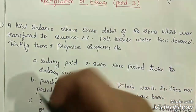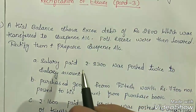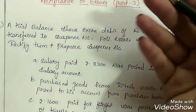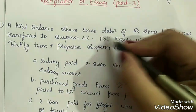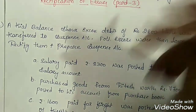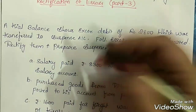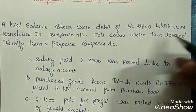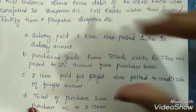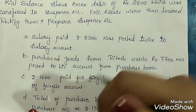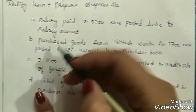The question is: a trial balance shows excess debit of rupees 2800. The debit side amount is more than the credit side, but the rule is that both sides must be equal. So this rupees 2800 was transferred to a suspense account. Following errors were then located — we need to rectify them and also prepare the suspense account.